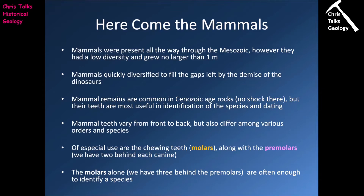Of special use for identifying mammals are the chewing teeth — the molars — because they are typically the largest and therefore the hardiest teeth and so they're more likely to survive and become incorporated into sediments. There's also another class of tooth which can be useful: the premolars. Human beings have two premolars situated behind each canine; they feel quite big and broad like molars but have a sharper edge because they're designed for slicing. The molars alone — of which human beings have three behind each set of premolars — are often enough to identify an individual species, making them extremely helpful for dating rocks from the Cenozoic.